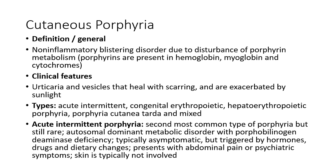Now coming into cutaneous porphyria. This is a non-inflammatory blistering disorder due to disturbance of porphyrin metabolism. Porphyrins are mainly present in hemoglobin, myoglobin, and cytochromes. The clinical features of cutaneous porphyria include urticaria and vesicles that heal with scarring and are exacerbated by sunlight. Types are acute intermittent, congenital erythropoietic type, hepatoerythropoietic porphyria, porphyria cutanea tarda, and a mixed form. Acute intermittent porphyria is the second most common type of porphyria, but still rare. It is an autosomal dominant metabolic disorder with porphobilinogen deaminase deficiency. It is typically asymptomatic but triggered by hormones, drugs, and dietary changes, presenting with abdominal pain or psychiatric symptoms. Skin is typically not involved in acute intermittent porphyria.